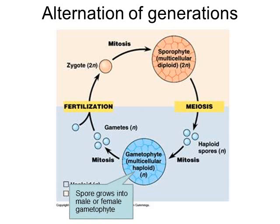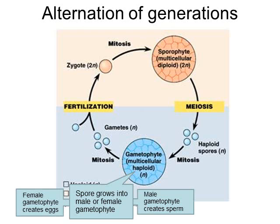The spores will grow into what is called a gametophyte. The spores are haploid, and they grow into the haploid organism called the gametophyte. Some gametophytes are male and some are female. In the word gametophyte you can see the prefix for gamete — so gametophytes make gametes. The male gametophyte creates the male gamete called sperm, and the female gametophyte creates the female gamete, which is the egg.